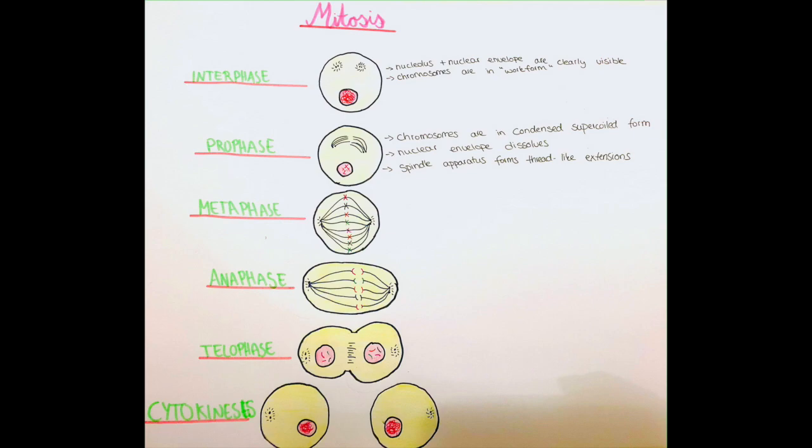Also the nuclear envelope starts to dissolve and the spindle apparatus forms these thread-like extensions. The spindle apparatus is a protein complex originating from different parts in the cell and it will form these spindles. That's why it's called spindle apparatus which attach to the chromosomes but that comes later. So far only the chromosomes coiled up and some proteins formed within the cell for forming the spindle apparatus later.